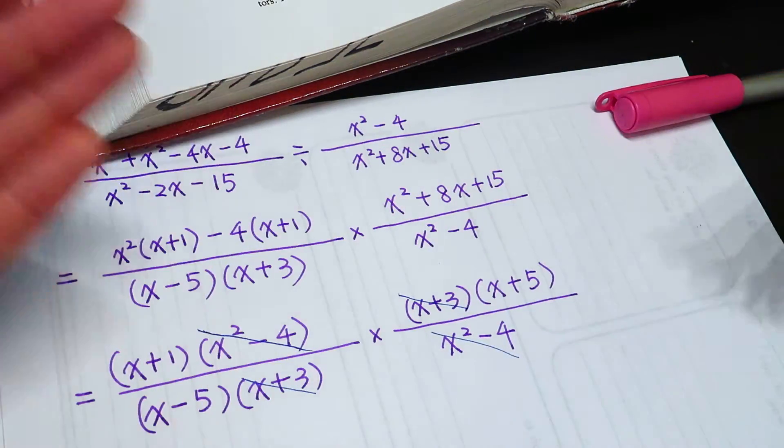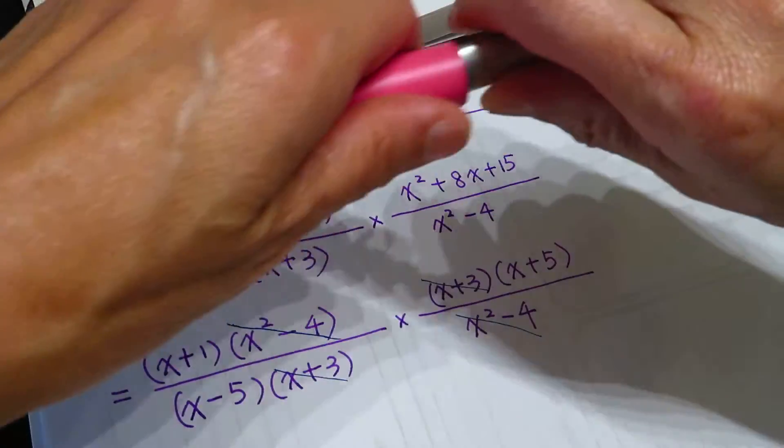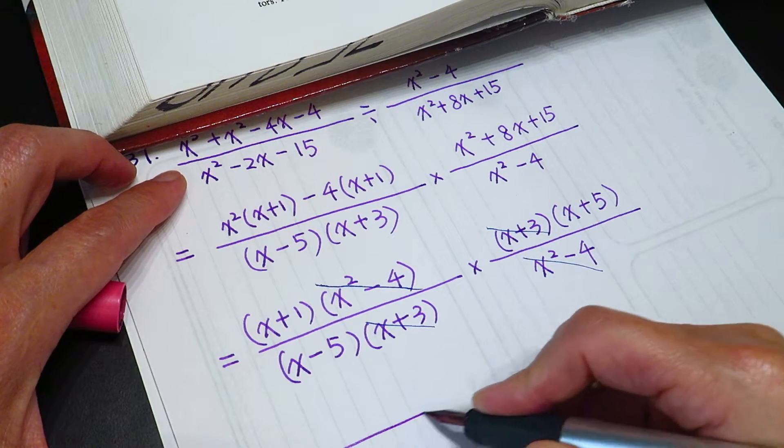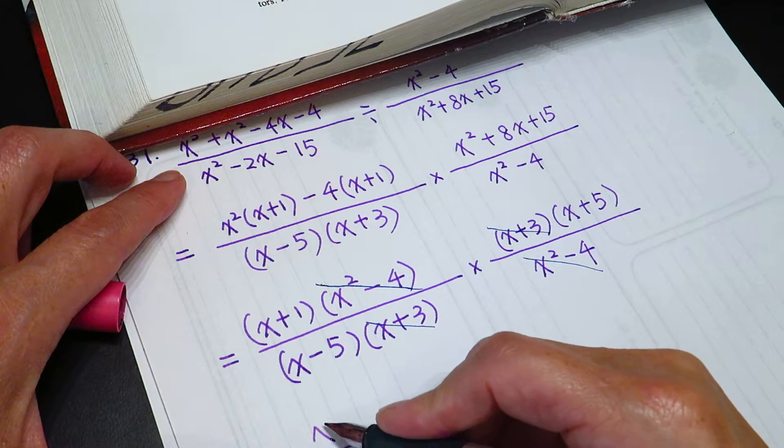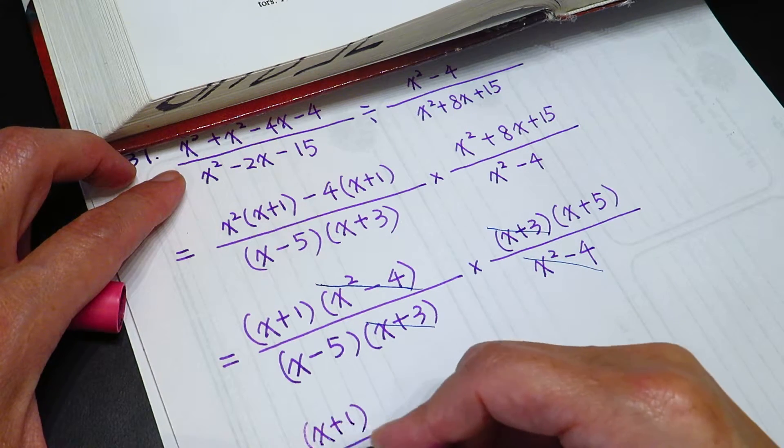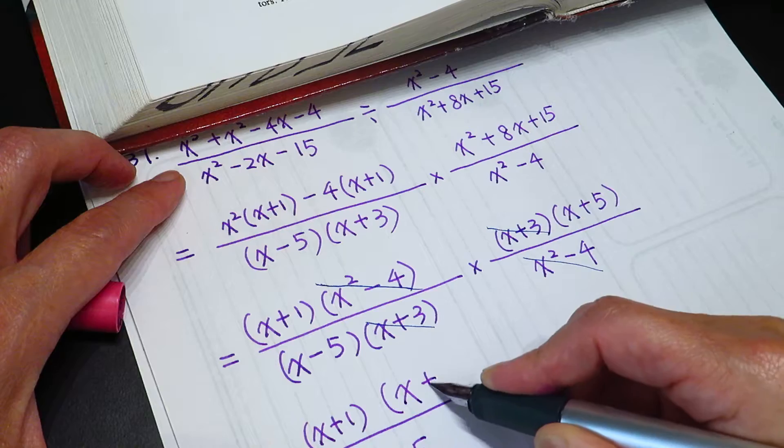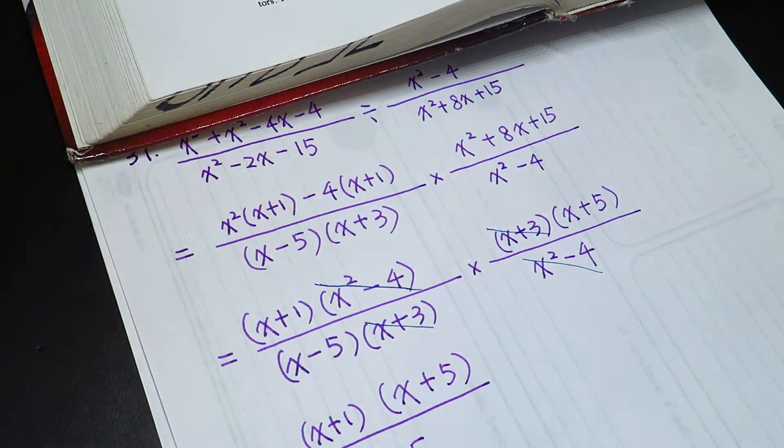They can even out. So the result is x minus 5, x plus 1 times x plus 5. And that is the result.